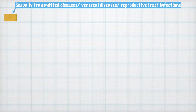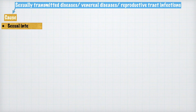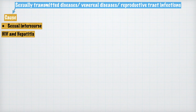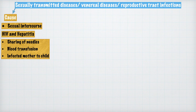The main cause of any STD is sexual intercourse. Some of them, like HIV (AIDS) and hepatitis, can also be transmitted through sharing of needles, blood transfusion, and from an infected mother to the child.